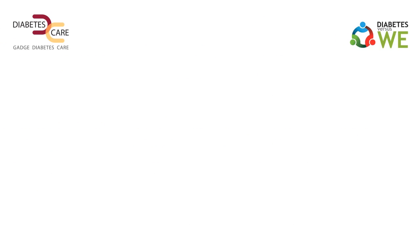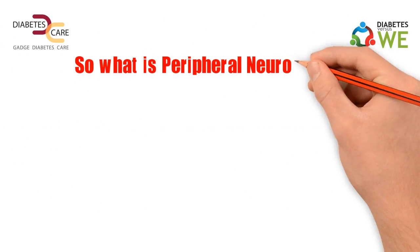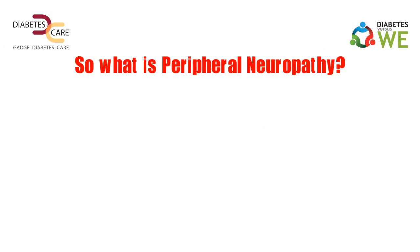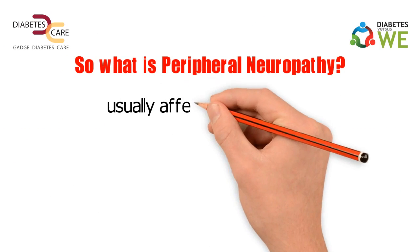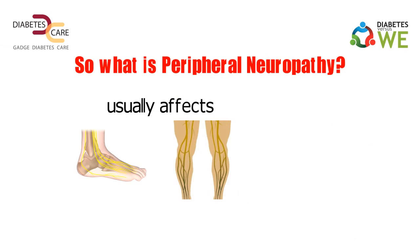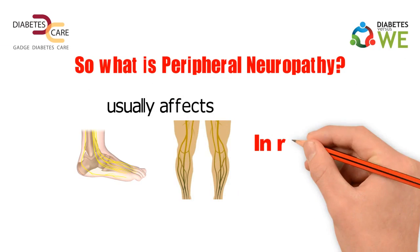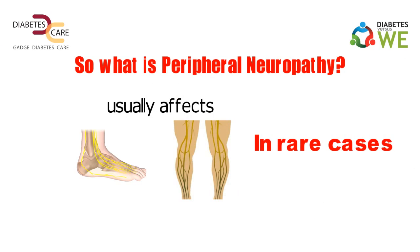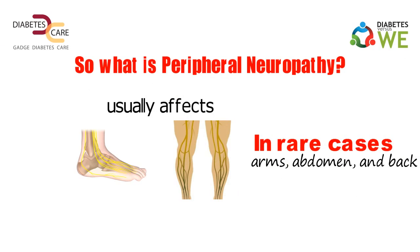So what is peripheral neuropathy? It is the one that usually affects the feet and legs. In rare cases, it affects the arms, abdomen, and back.